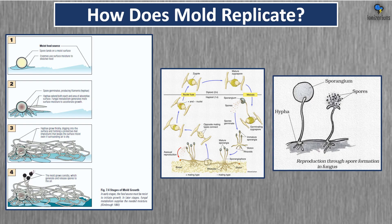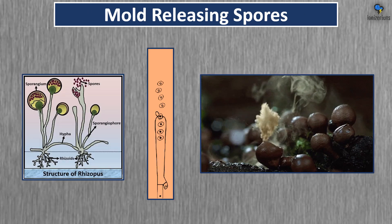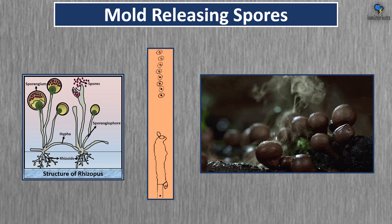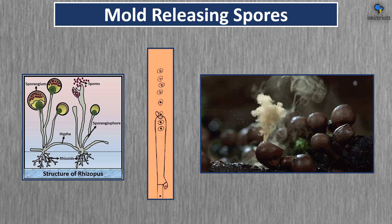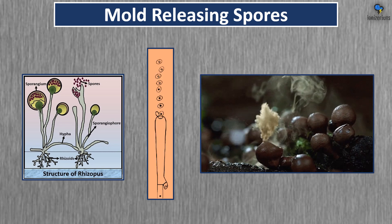How does mold replicate? A mold spore lands on a moist surface. Enzymes use surface moisture to dissolve food. The spore germinates, producing filaments, and keeps expanding, growing, and consuming more food. If there is moisture and food content it will grow, and eventually mold spores will be released.